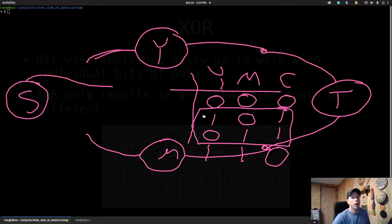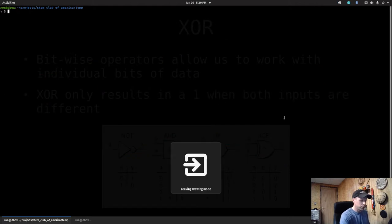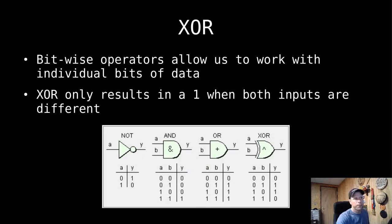In binary terms, I only get a one when only one of the bits is set, or better said, I only get a one when the bits are different. If they're the same I get a zero; if they're different I get a one. That's the XOR relationship we're going to use in our lab.